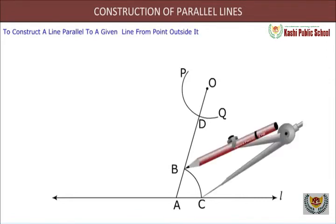Step 5: Now we place the pointed tip of the compass at C and adjust the opening so that the pencil tip is at B.